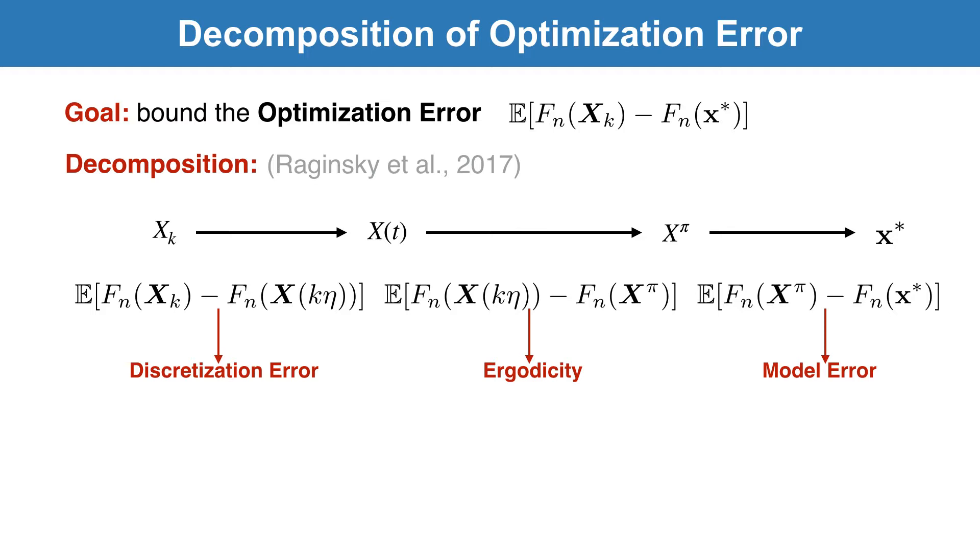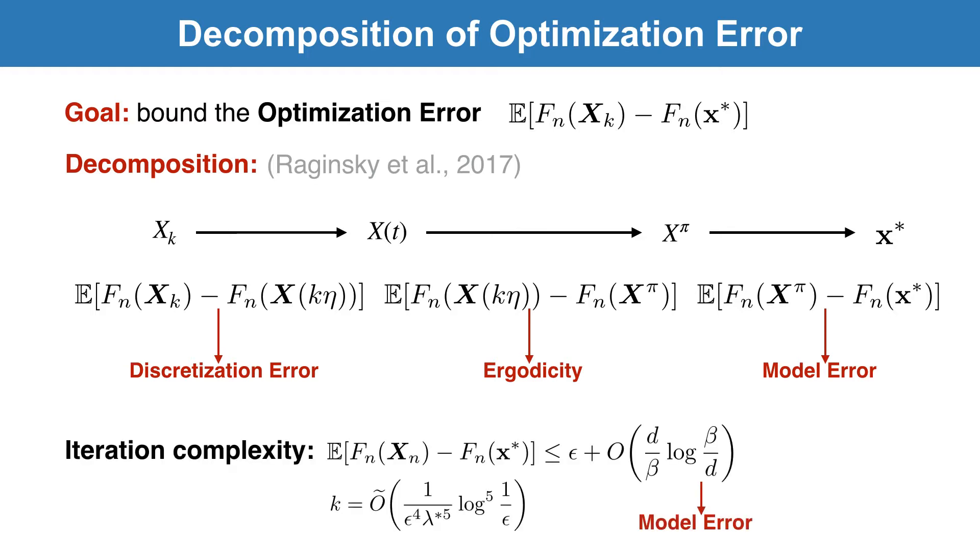It is proved that GLD converges to a neighborhood of the global minimizer, up to a radius with model error after 1 over epsilon to the power of 4 iterations. This iteration complexity is rather high, since the discretization error can be very large.